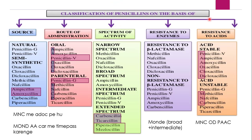The classes of penicillins are: first, classified on the basis of source — whether obtained from natural origin or semi-synthetic. Second, classified based on route of administration — oral or parenteral. Third, classified based on spectrum of activity — narrow spectrum, broad spectrum, intermediate spectrum, or extended spectrum. The next class includes resistance to enzymes and resistance to acids.